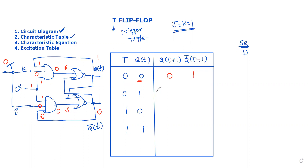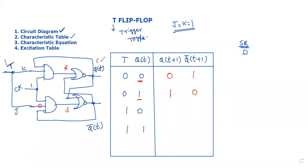The previous state is 1, and the complemented form is 0. Next case: T equals 1, Q(t) equals 0. We check the outputs. Q(t) equals 0, here it becomes 1. Q(t) equals 1, output is 1.